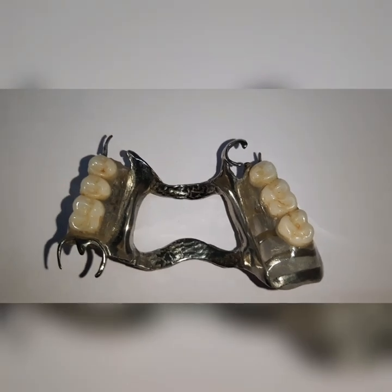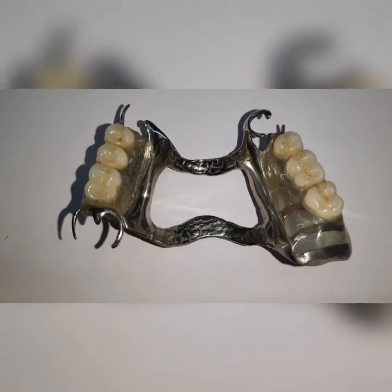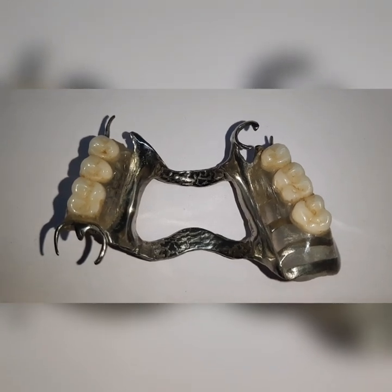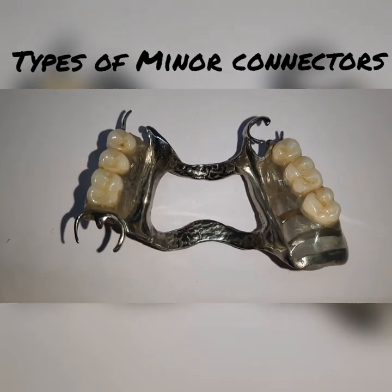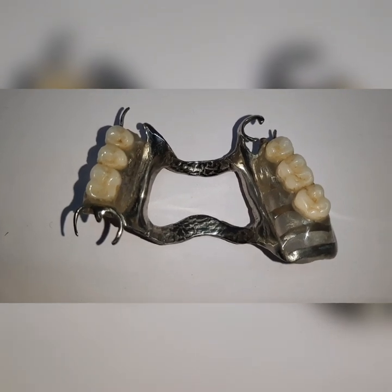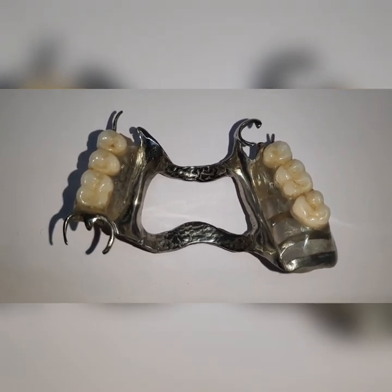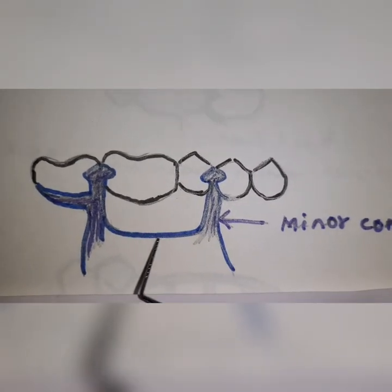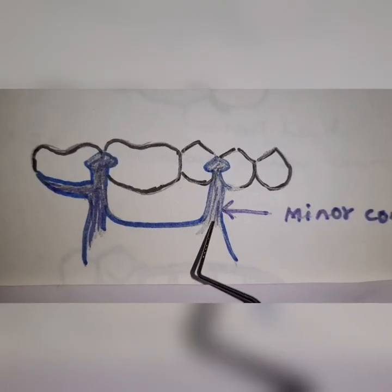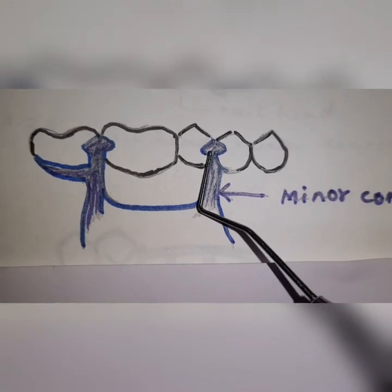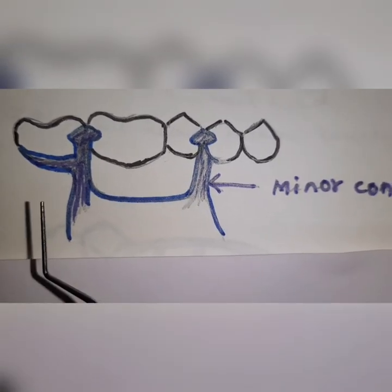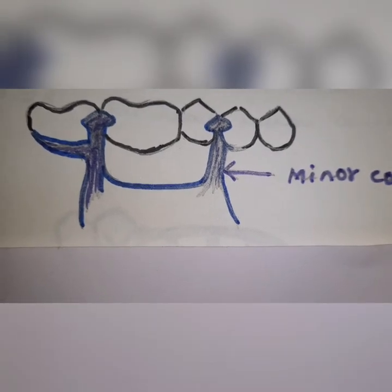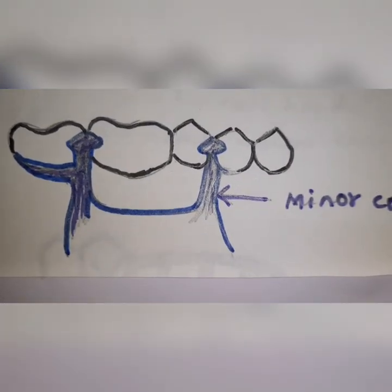Now, what are the types of minor connectors? There are principally four types. The first type consists of those connectors which connect the direct retainers to the major connector. As you can see here, the minor connectors are connecting to the direct retainers — that is, the clasp assembly — on both sides. They should be rigid and should have adequate bulk to withstand functional forces.